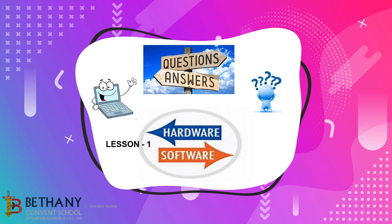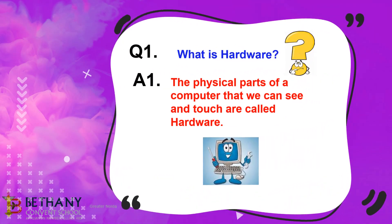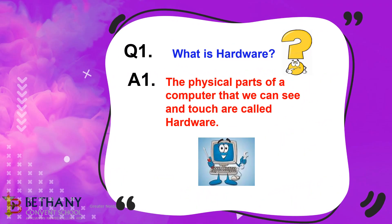Let's start with the first chapter, that is computer hardware and software. What is hardware? The physical parts of a computer that we can see and touch are called hardware.